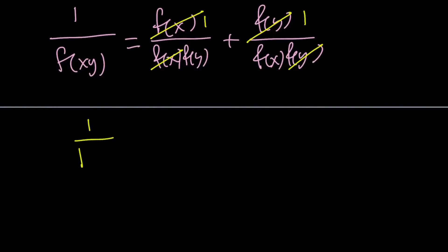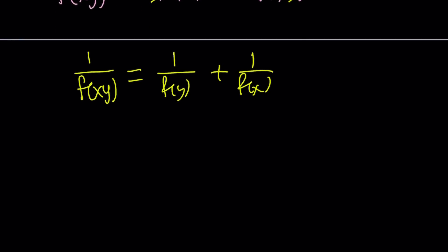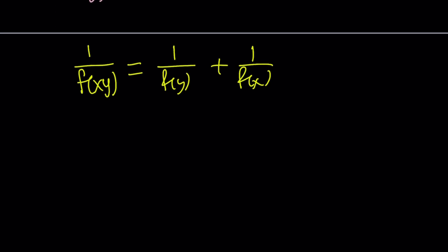1 over f of xy equals 1 over f of y plus 1 over f of x. At this point, this should look familiar to you, but it's just reciprocals. So here's what we're going to do.